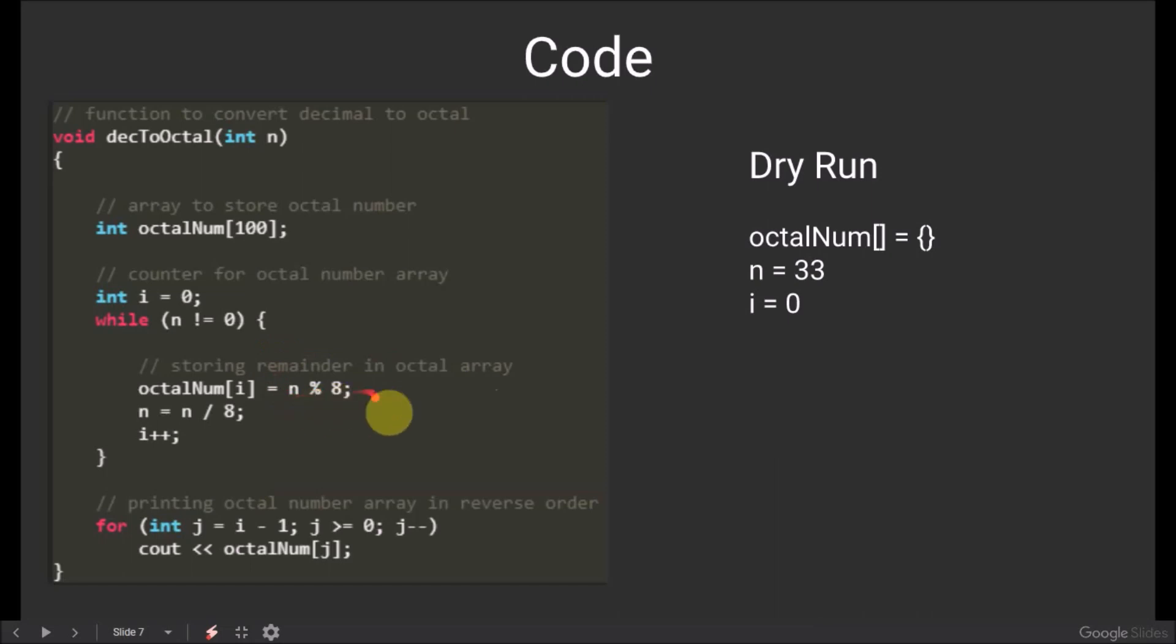We store the remainder of n when divided by 8 into the octalNum array. That is, 33 divided by 8 gives us remainder 1 and we store it in the ith position of the octalNum array. Now, n will be divided by 8. That is, 33 divided by 8 gives us 4, and we increase the value of i by 1.